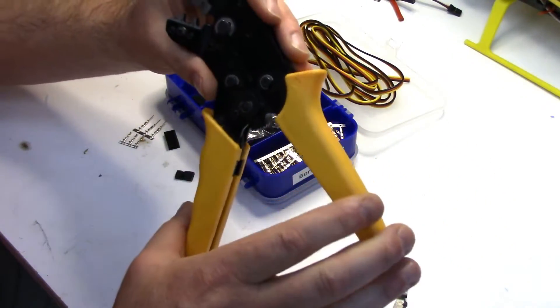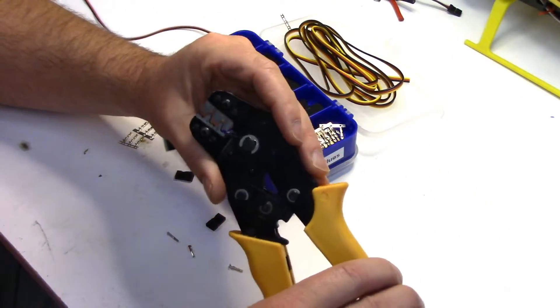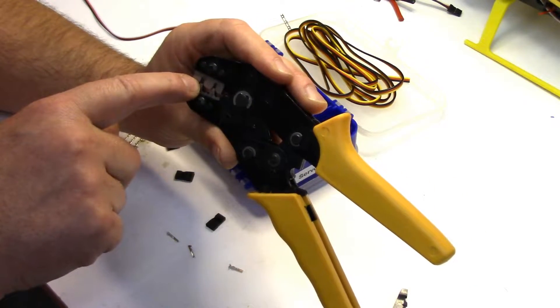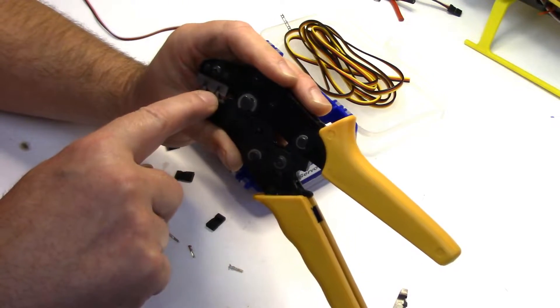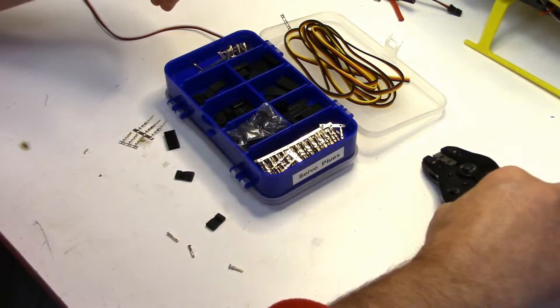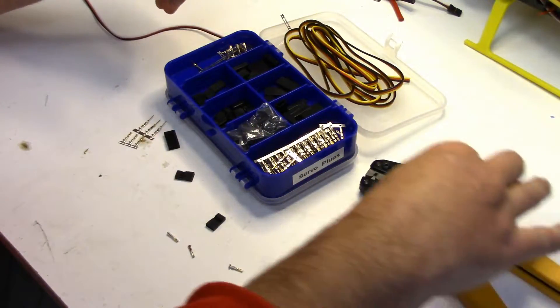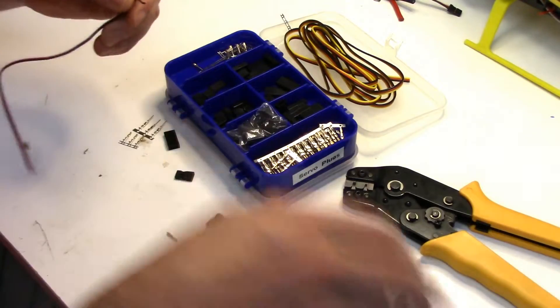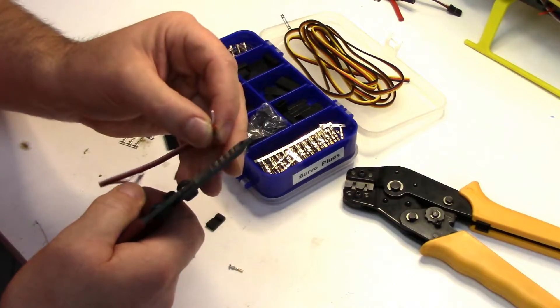And just like in that JST video, I'm just using this cheapy hobby type crimper. It's got the two sizes. One for the JST RCY pins and the smaller one for all of your servo pins. And I link to this tool like this on my RC connector page. So anyways let's strip these real quick.